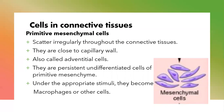We also have the primitive mesenchymal cells. They are scattered irregularly throughout the connective tissue and are also close to capillary walls — they are also called adventitial cells. They are persistent undifferentiated cells of the primitive mesenchyme, originating from the mesodermal layer of the embryonic tissue. Under proper stimuli, they can become macrophages or other cells.